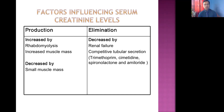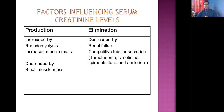Trimethoprim is a type of antibiotic and is one component of co-trimoxazole. Cimetidine is an H2 receptor blocker used in the treatment of peptic ulcer disease. Spironolactone and amiloride are potassium-sparing diuretics. These drugs block the tubular secretion of creatinine, resulting in increased creatinine levels in the blood. Serum creatinine level may be low in case of malnutrition, where there is very small muscle mass.